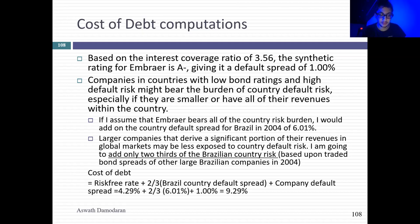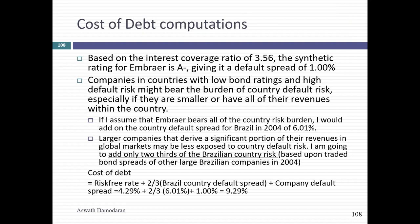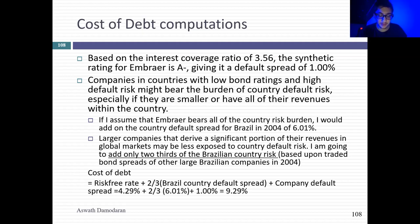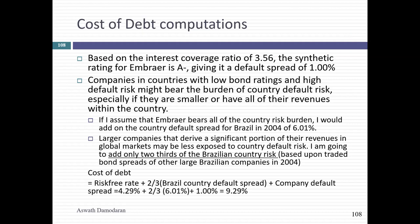Student: What is the two-thirds on the bottom of the slide? Professor: The two-thirds is like a Lambda in the bond market — a measure of how exposed the company is to country default risk. I looked at five big Brazilian companies with foreign revenues to estimate it. You can use the same Lambda calculation from equity as a substitute for the two-thirds.